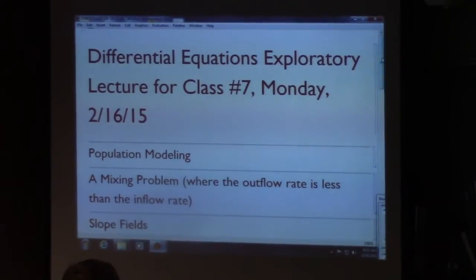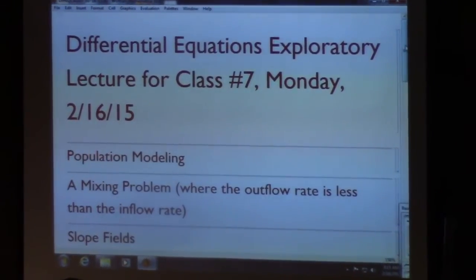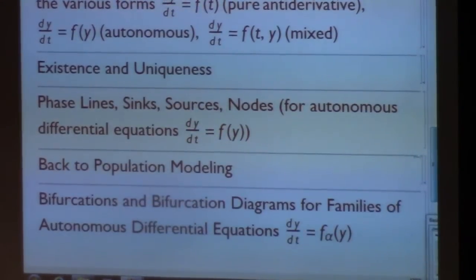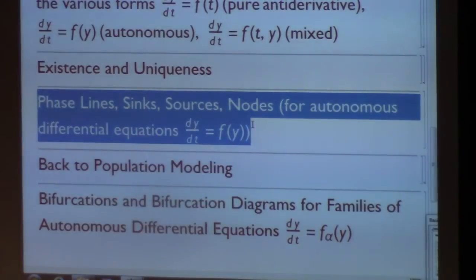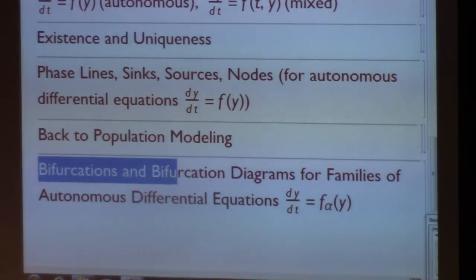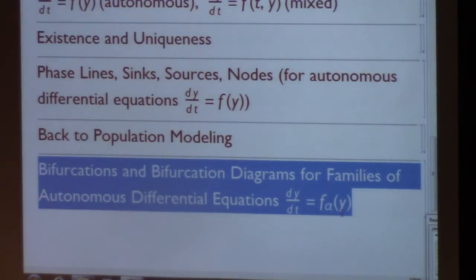That's one of the trickier questions on the homework. I do want to talk some more about existence and uniqueness today, but I'll save that for the last ten minutes of class. We want to continue talking about phase-line sinks and sources for autonomous differential equations in the context of a population model, related to the next completion assignment on bifurcations and bifurcation diagrams for families of autonomous differential equations.